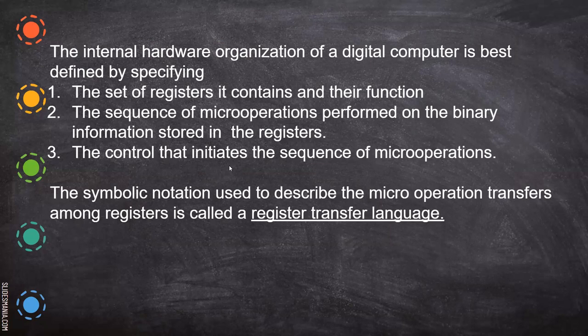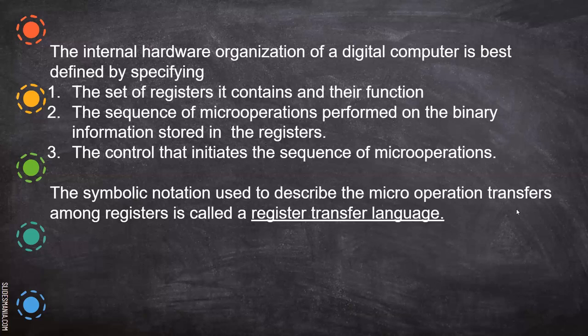The control that initiates the sequence of micro operations — what controls help in doing these micro operations — all these things must be specified. The symbolic notation used for that — just as in C you have symbolic notation like for i = 0 to represent a loop — here in the microprocessor, the symbolic notation used to describe the micro operation transfers along the registers is called Register Transfer Language.